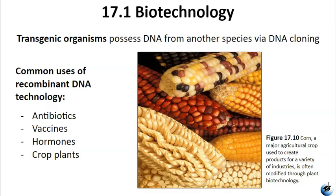Genetic engineering modifies an organism's genome using recombinant DNA to achieve desired traits, commonly done by adding foreign DNA through recombinant DNA vectors and plasmids, resulting in what is known as a GMO — genetically modified organism. If foreign DNA is transferred from one organism to another, that becomes a transgenic organism. Since the 1970s, scientists have genetically modified bacteria, plants, and animals for academia, medicine, agriculture, and industry purposes.